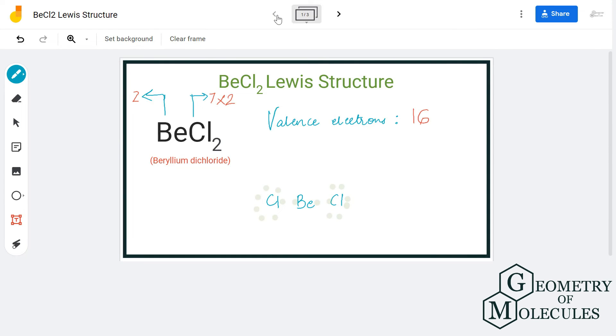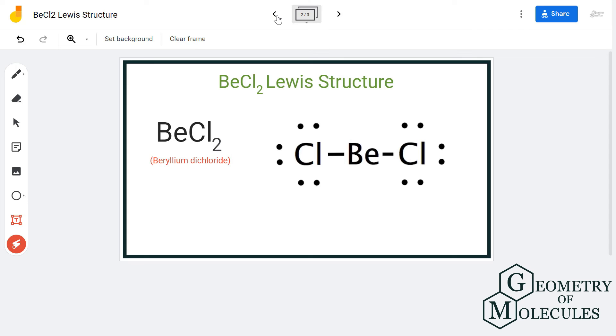Both these valence electrons of beryllium are now used up to form bonds with chlorine. So this is the Lewis structure for BeCl2 in which beryllium atom is forming a single bond with both the chlorine atoms.